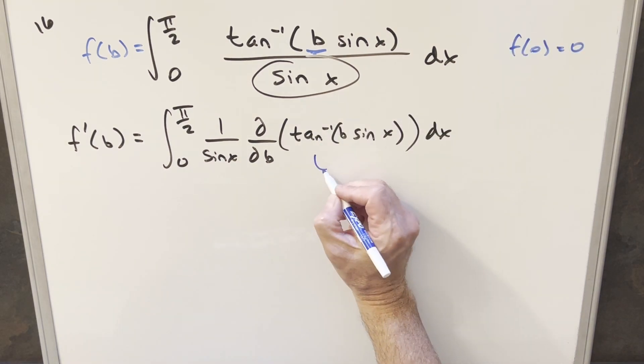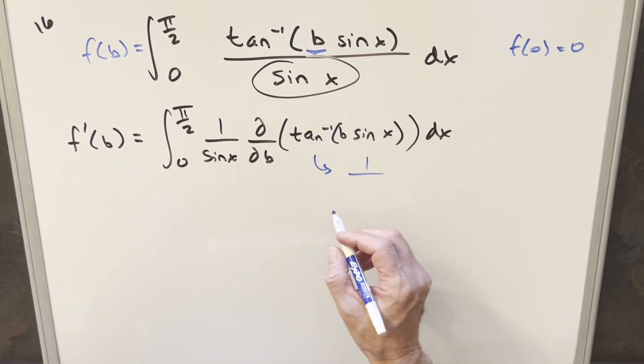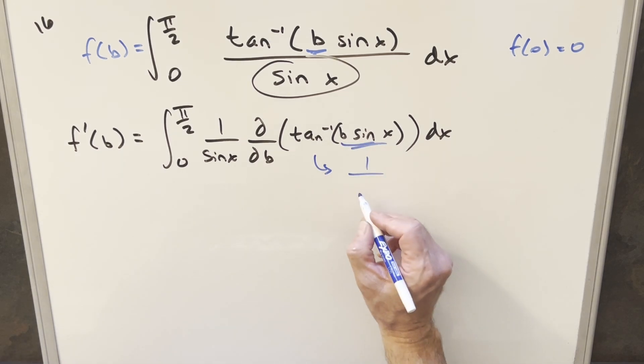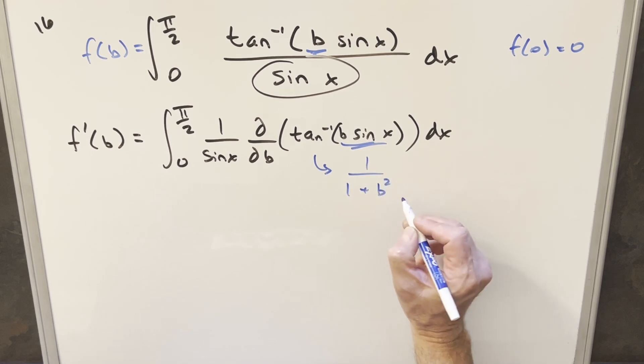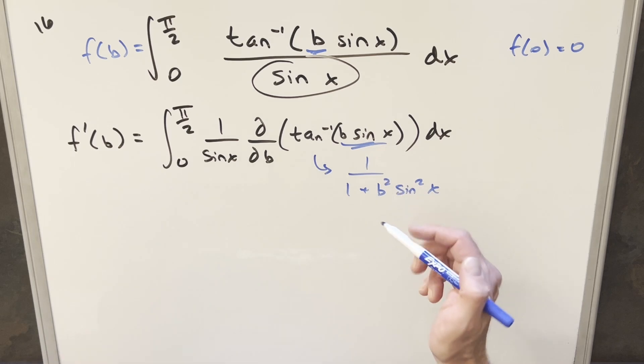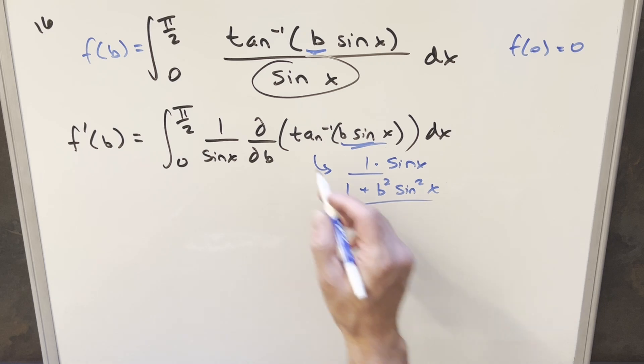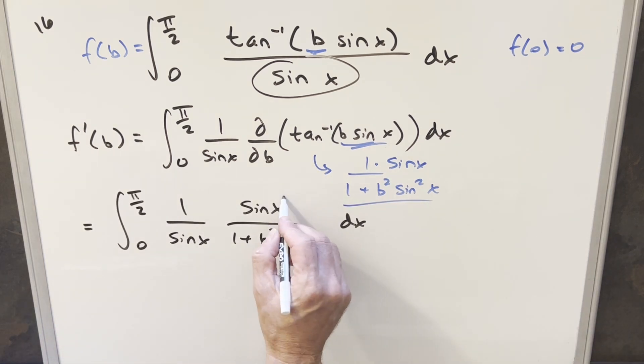So now for this derivative, the first part's easy. We're just going to get the normal derivative for arctan, but this is our whole input, so it's just going to be 1 over 1 plus b squared sine squared x. Then chain rule, differentiating with respect to b, this is just going to be sine x. And so we can take all this and plug it back into our integral. But then now we can just cancel out sine with sine. That's the simplification we need here.